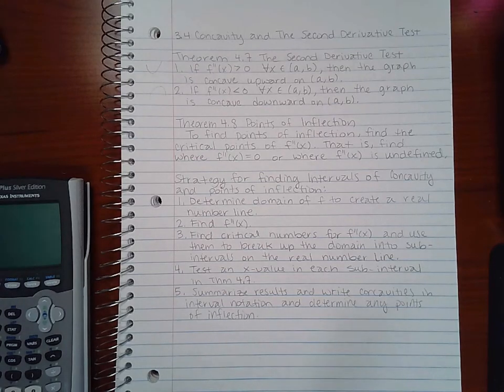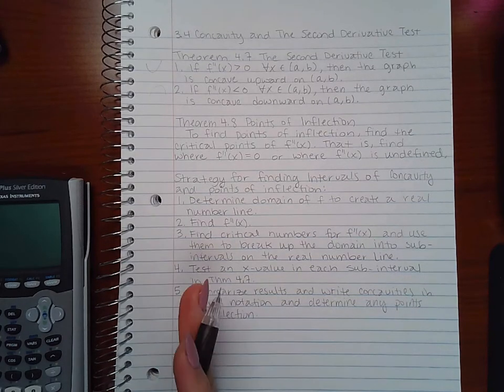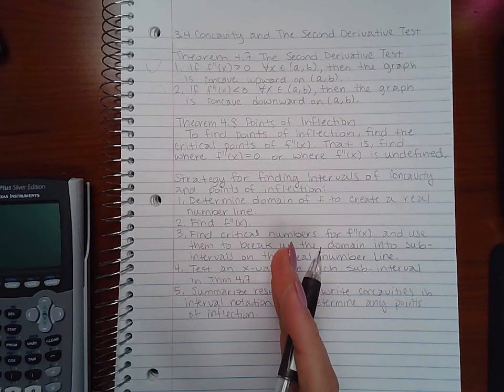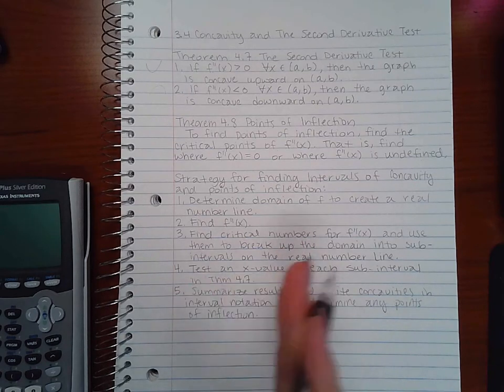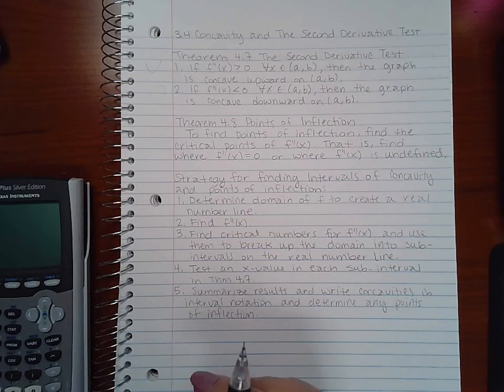Okay. So points of inflection, by definition, are where the concavity changes. So if the concavity is upward on one side of a critical number and still upward on the second side of a critical number, there's no point of inflection. Points of inflection are only when the concavity changes.